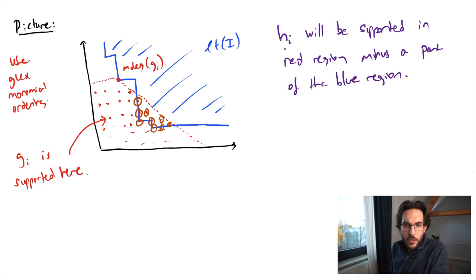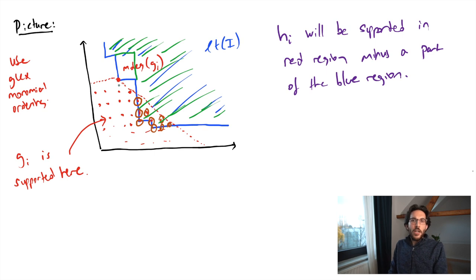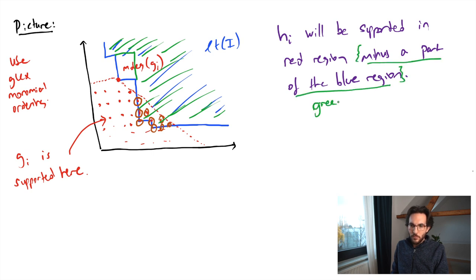To be more precise about where the new reduced polynomial h_i is supported: when we do our reduction process and subtract g_i from the remaining basis, we end up removing this square. All the monomials we get will live inside the green region. Since g_i defined the corner, removing this corner element just removes a square, and regardless of the ordering the new h_i will be supported in the red region minus the green region. In particular, this explains why h_i still has the same leading term as g_i.